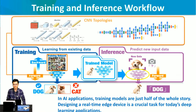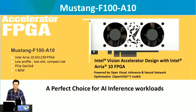Today, several great systems have done a very good job in the training process. However, how to design a real-time edge device is a critical task for today's deep learning applications. And that's why we are introducing the Mustang F100-A10 acceleration card.